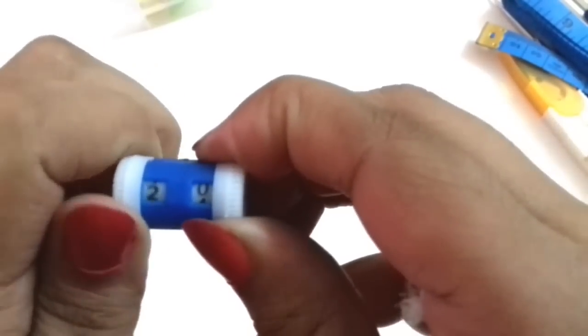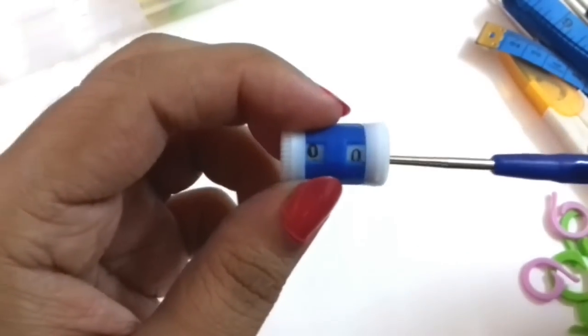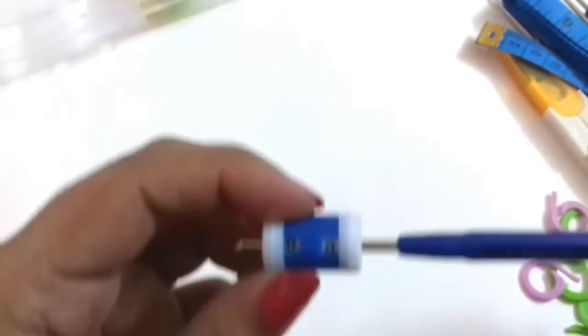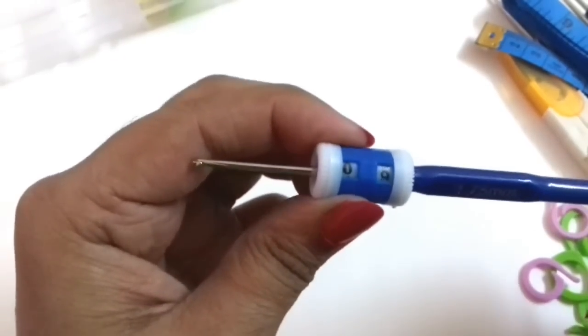And this is a small row counter for the blue crochet hooks which are for thread crochet. It also has numbers from 0 to 9 on both sides and this easily fits in it. Now you can set your numbers in this.